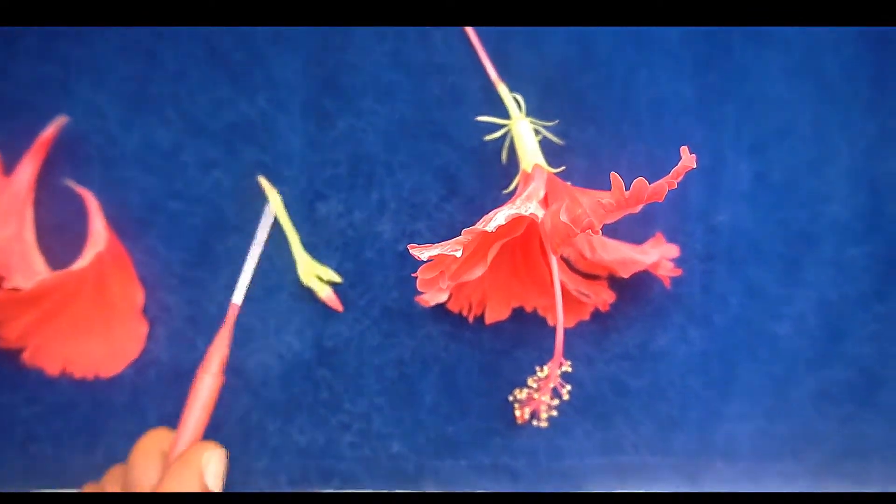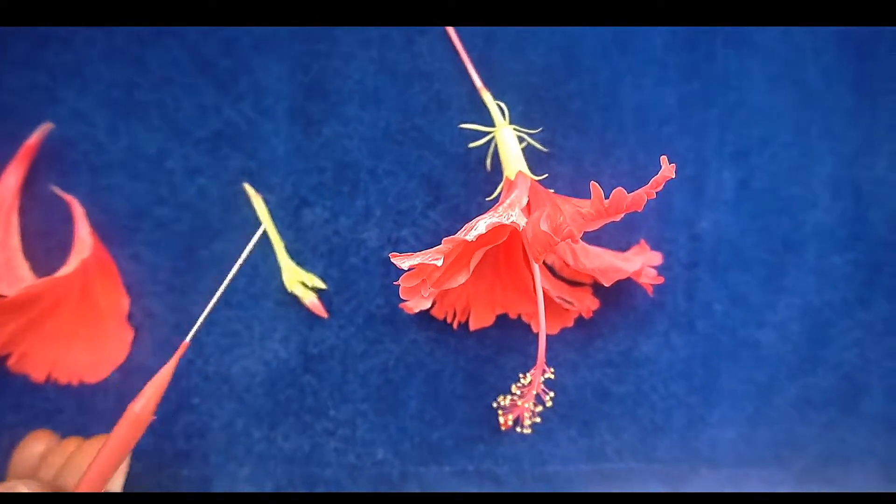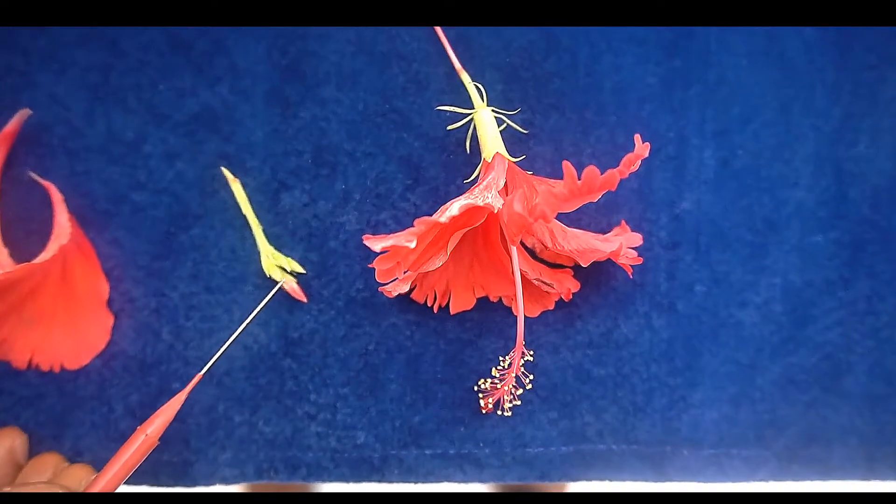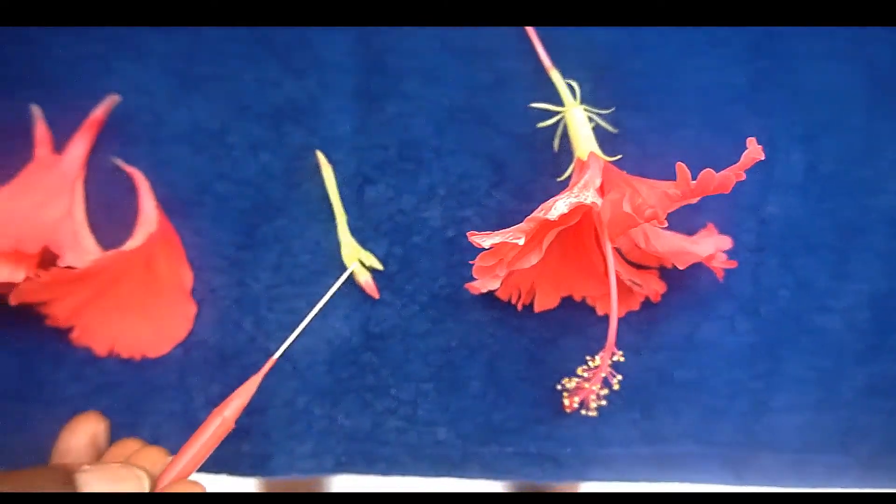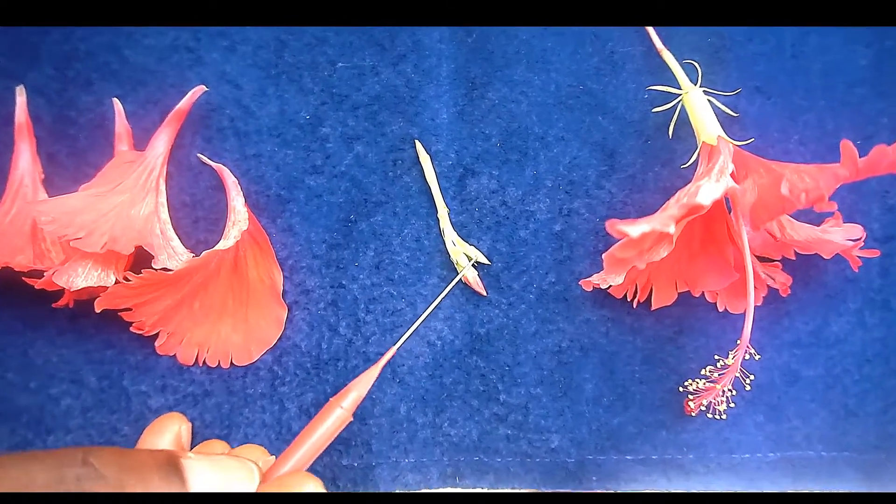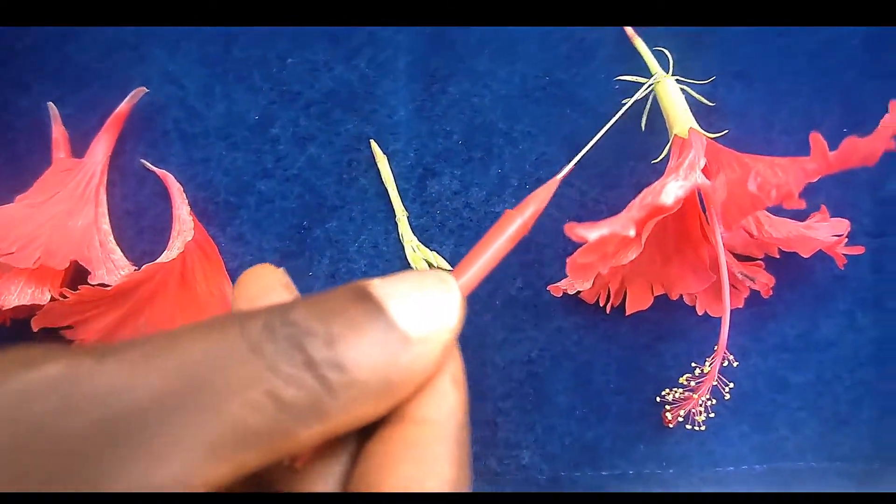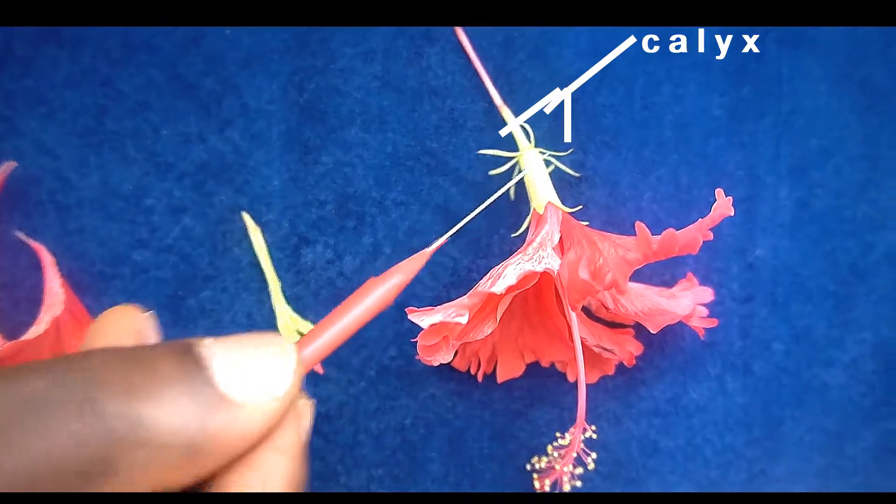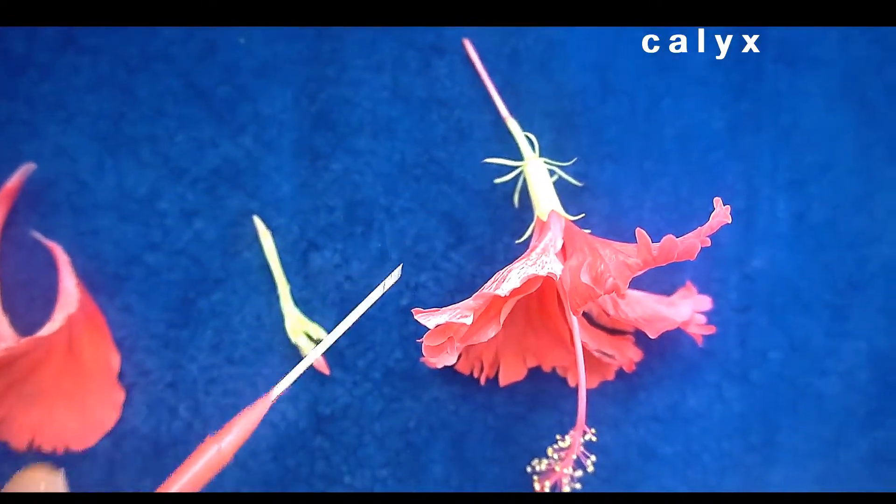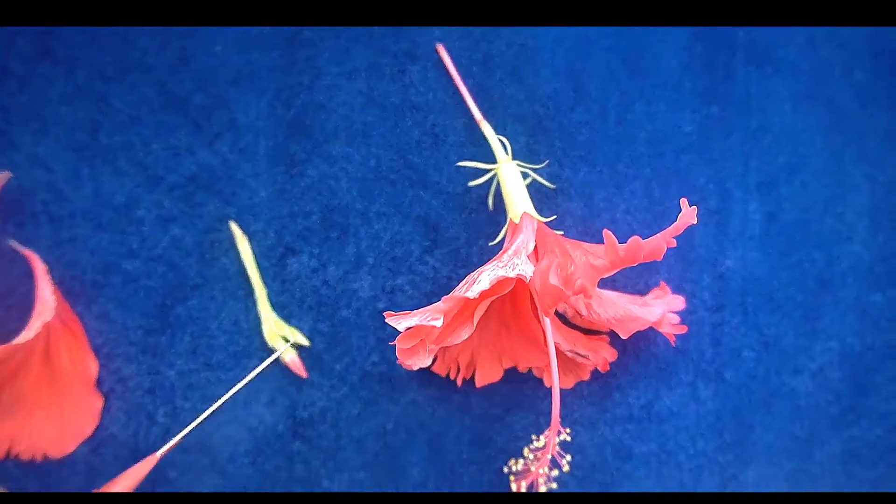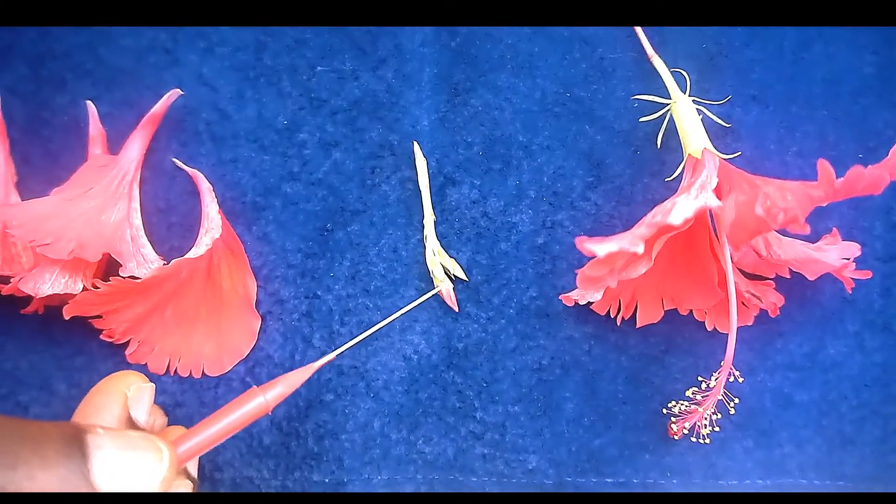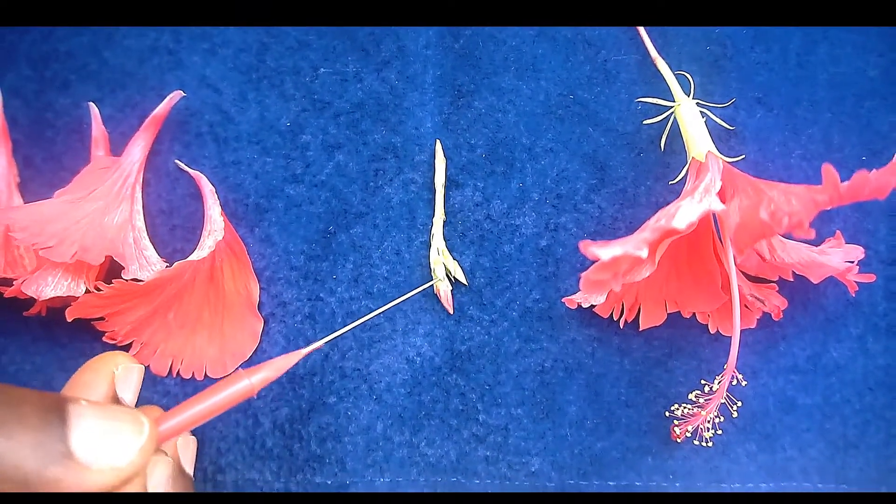When the corolla is in the flower bud, like we have here, it is protected by the calyx. This is the calyx. So the calyx actually protects the corolla when it's at the stage of a flower bud.